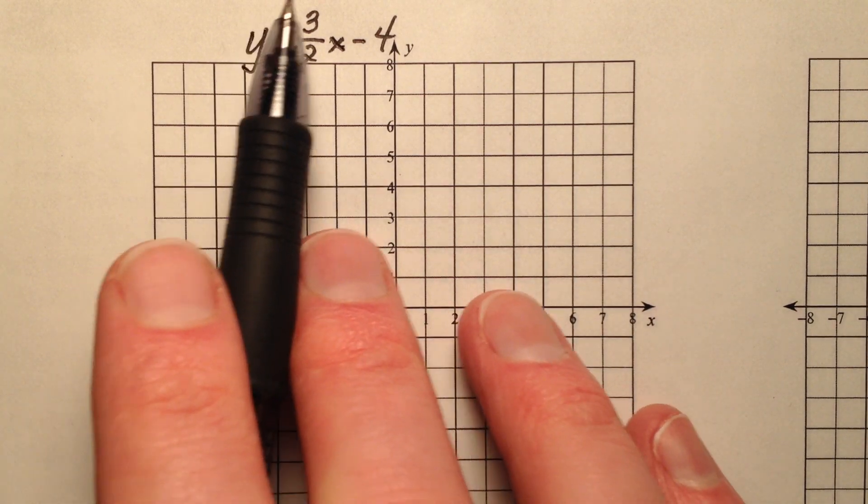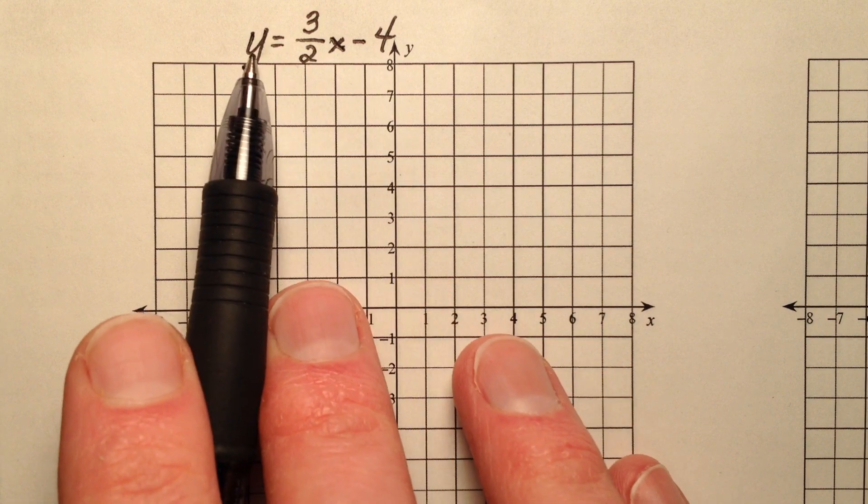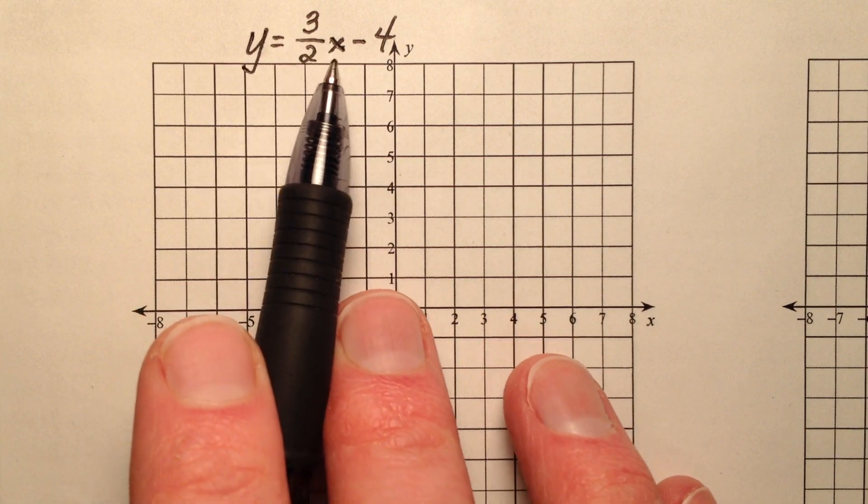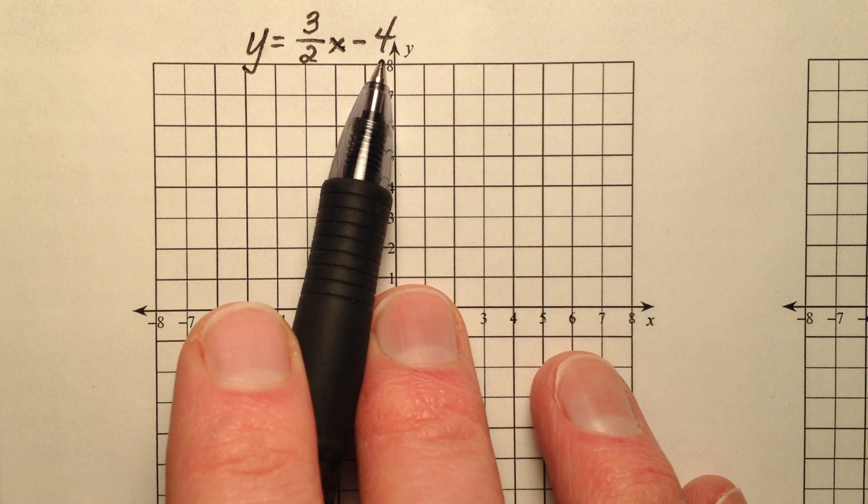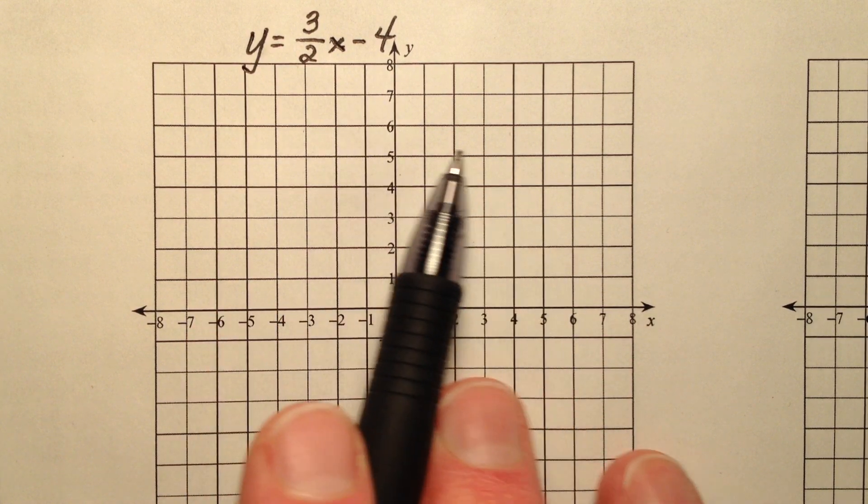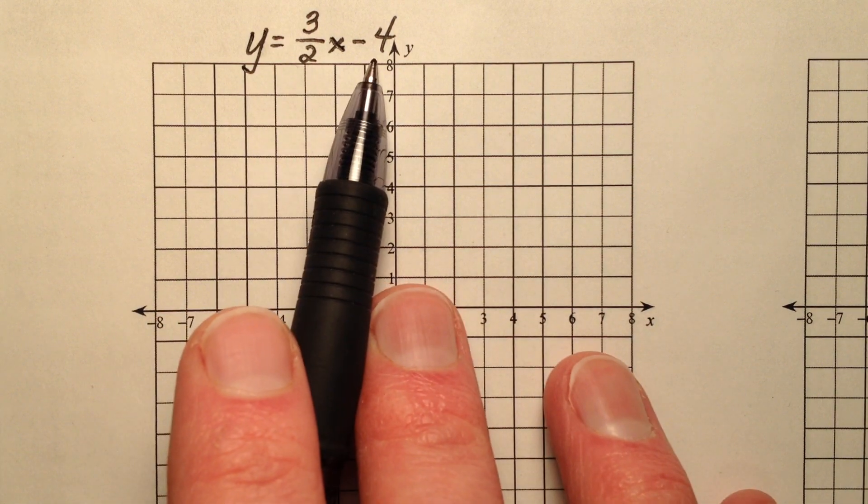In this example, we're going to graph the line given by the equation in slope-intercept form, y equals 3 halves x minus 4. The two pieces of information that we need in order to graph the line in slope-intercept form are going to be the slope and the y-intercept.